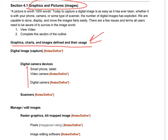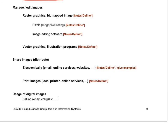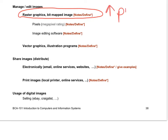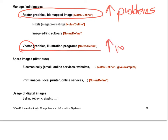In graphics and pictures, we reviewed using them to make a point and how we capture them — using scanners, for example. It's very important to understand the difference between bitmap and vector graphics. Bitmaps use dots to represent an image, and resizing can cause quality problems. Vector graphics use vectors and algorithms to draw the picture, so you can resize them and retain quality.